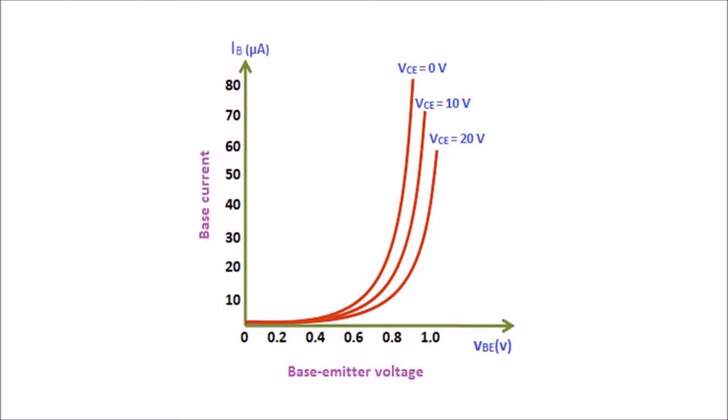The input current IB in CE configuration is very small compared to the input current IE in common base configuration. The input current in CE configuration is measured in microamperes, whereas in CB configuration it is measured in milliamperes. In CE configuration, IB is produced in the base region, which is lightly doped and has small width, so it produces only a small current. In CB configuration, the input current is produced in the emitter region, which is heavily doped and has a large width, producing a large input current.